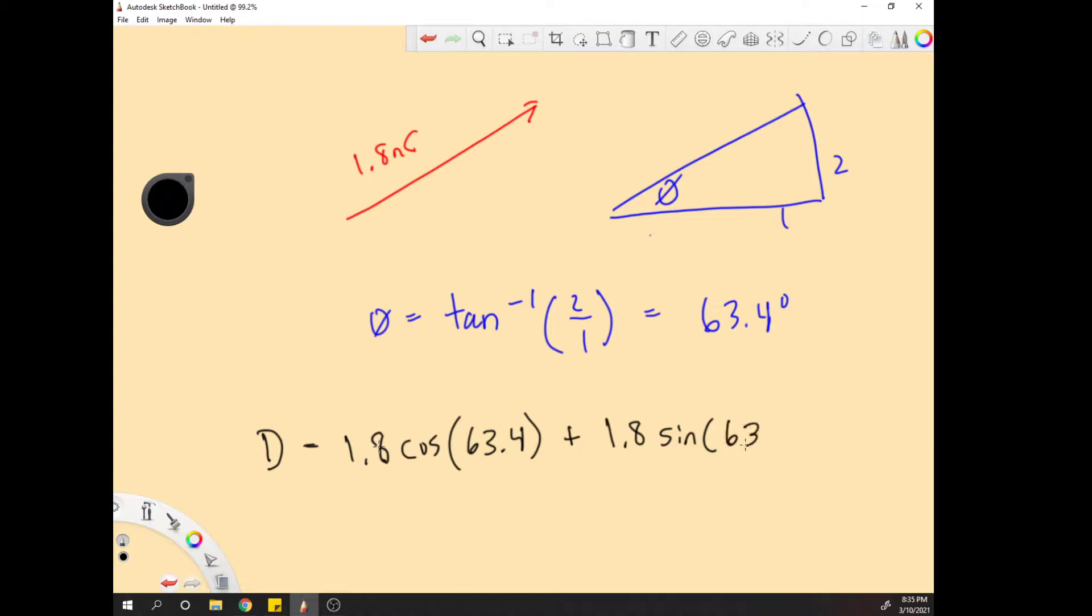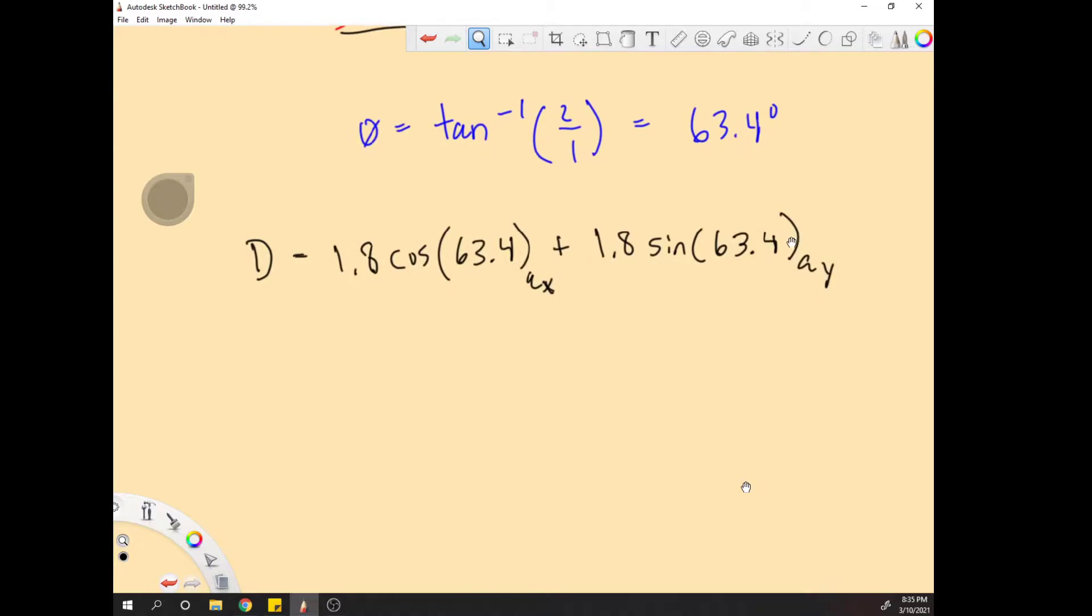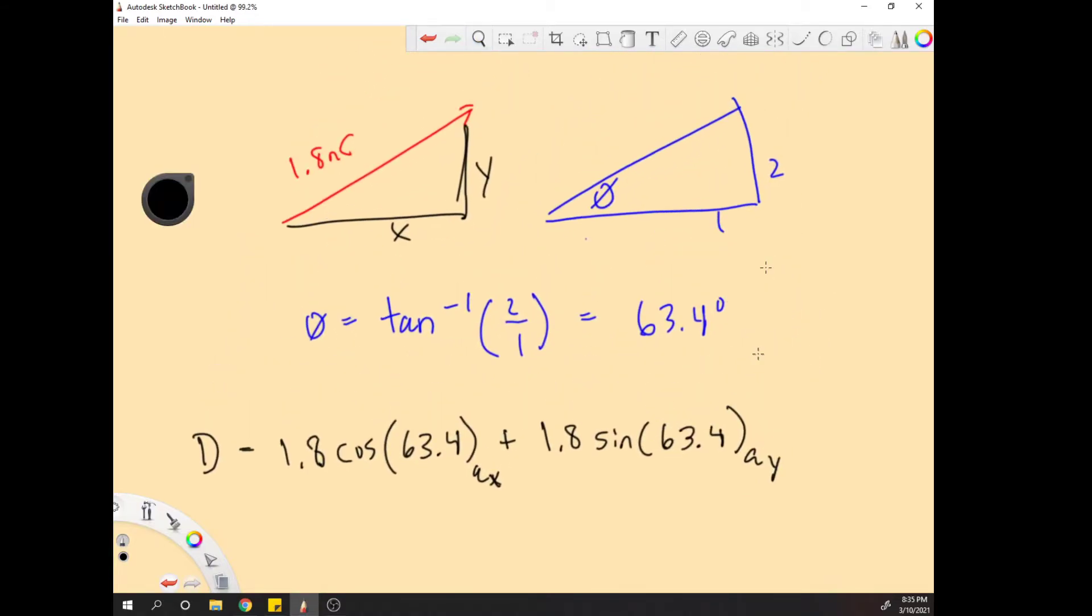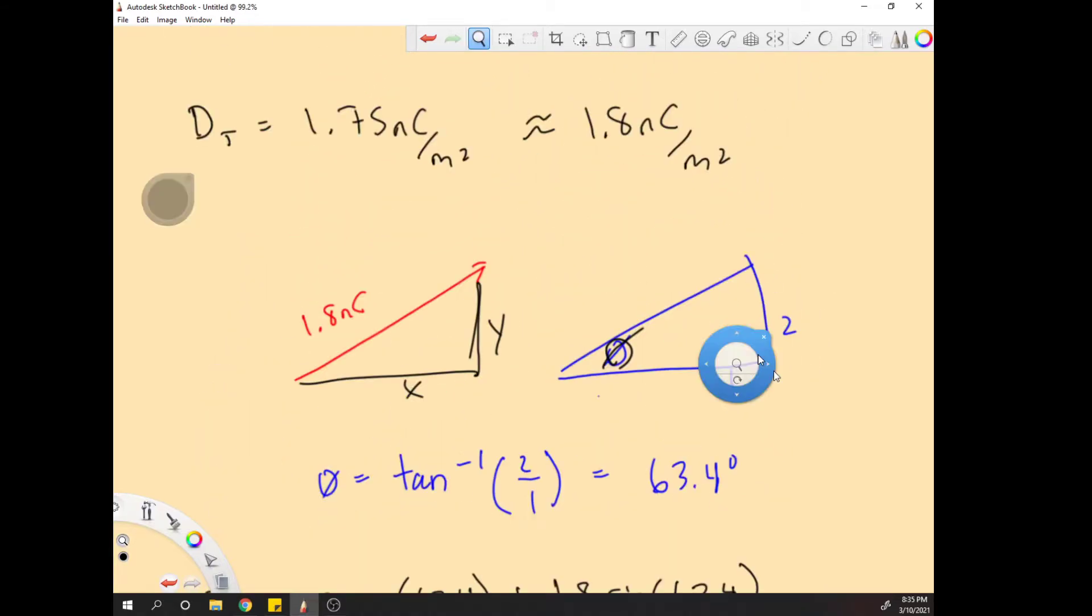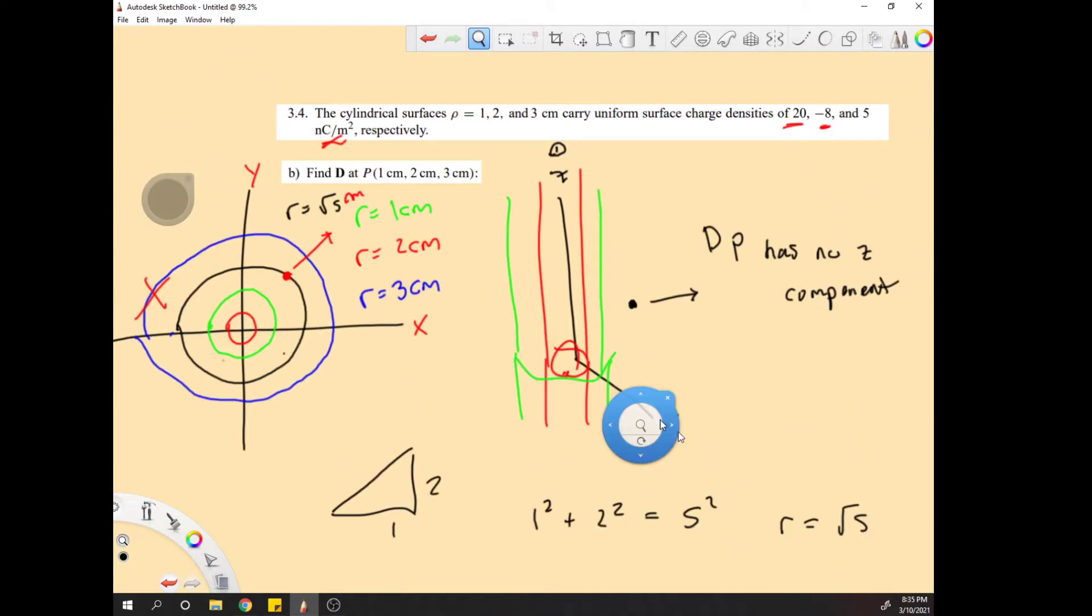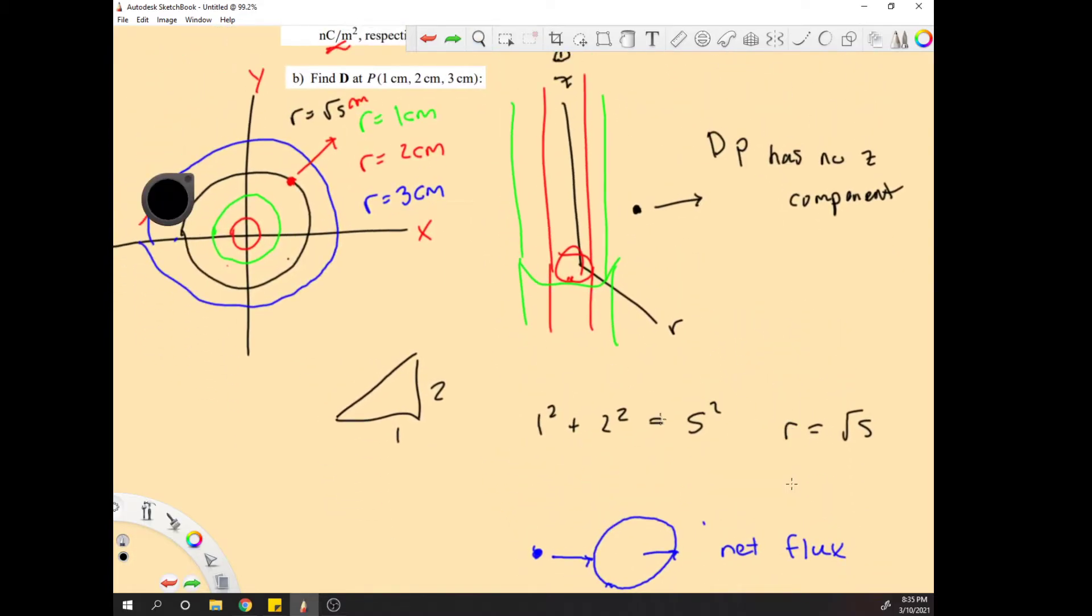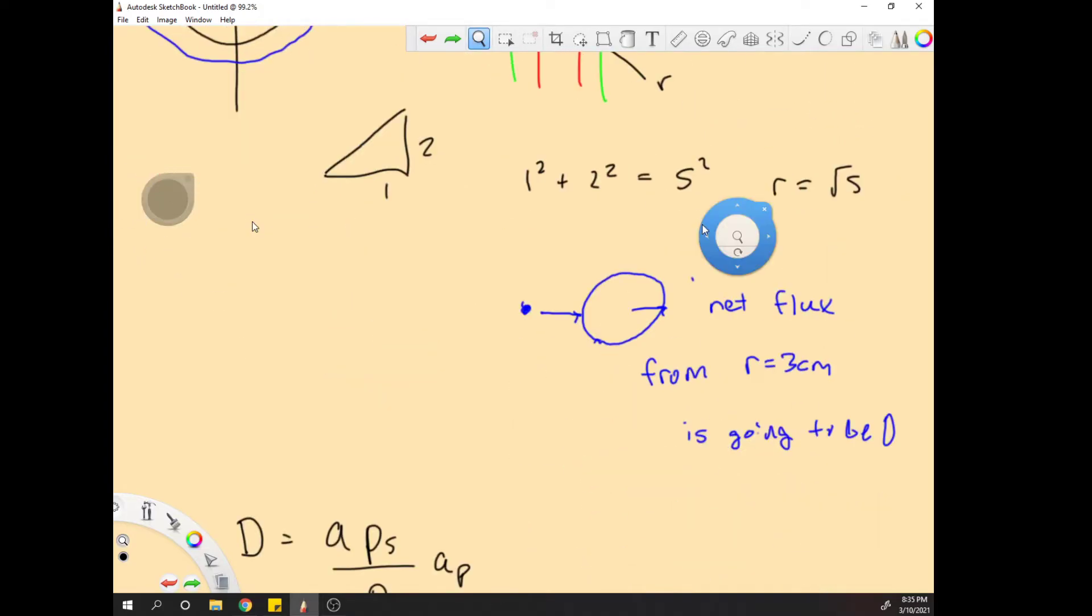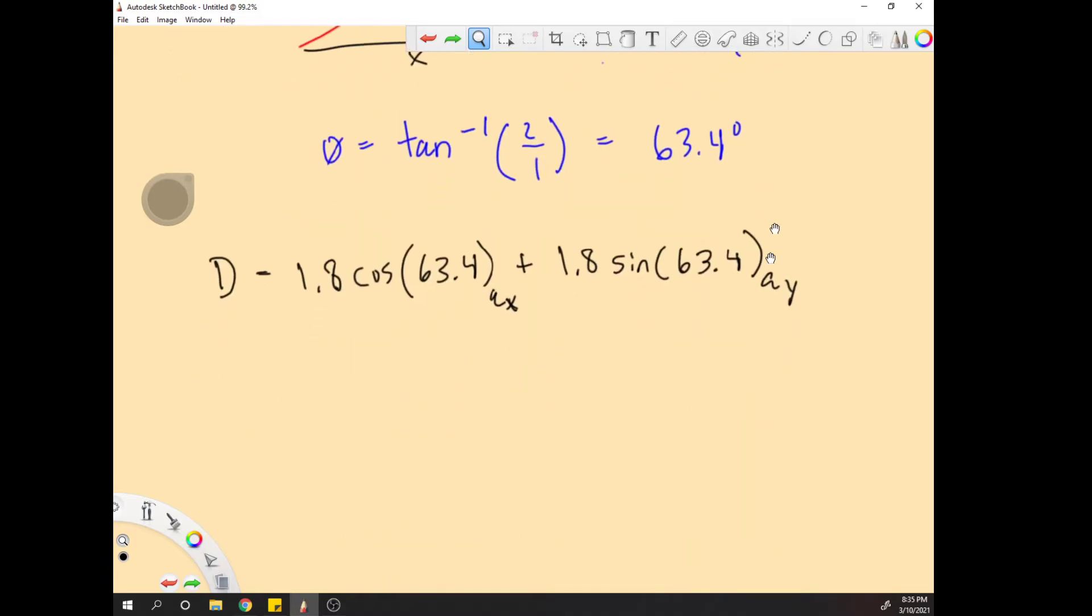It's going to be equal to 1.8 sine of this angle and it's going to be in the x direction. All we've done is we've taken this and we've made an x and y component. And we already knew where to get the angle from because it gave us the x and y length essentially, right here. We knew where on the circle we had the answer.